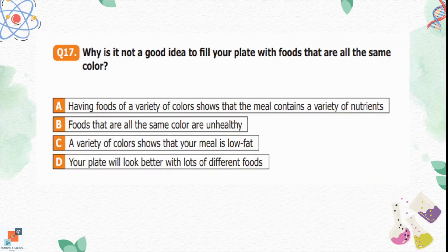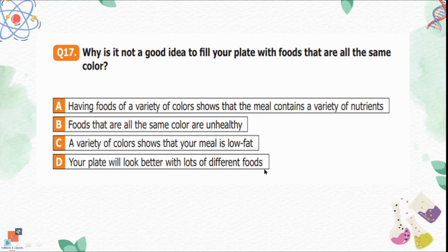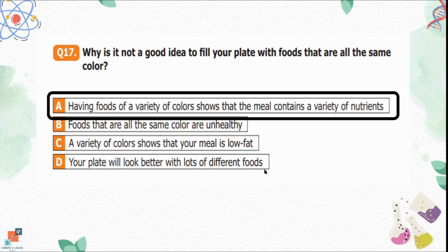Question number 17: Why is it not a good idea to fill your plate with foods that are all the same color? Option A is having foods of a variety of colors shows that the meal contains a variety of nutrients — this is the correct reason. Option B is foods of the same color are unhealthy — incorrect. Option C is a variety of colors shows the meal is low fat — not necessarily true. Option D is your plate will look better — not the reason. Option A is the only correct option.